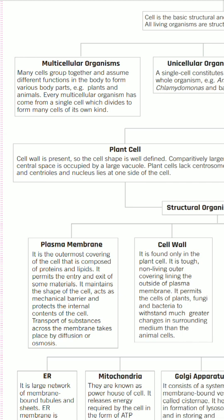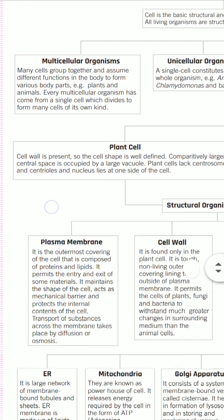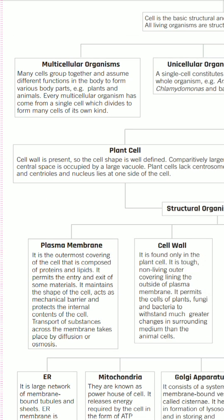In multicellular organisms, many cells group together and assume different functions in the body to form various body parts - for example, plants and animals. Every multicellular organism has come from a single cell which divides to form many cells. We humans have millions of cells in our body, but the human body is actually made from a single cell that divides further and further through the process of cell division.